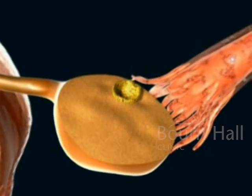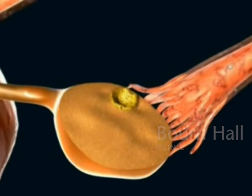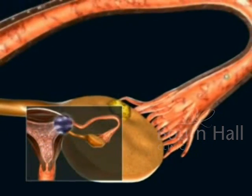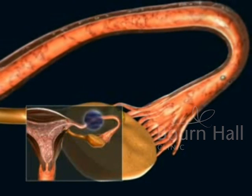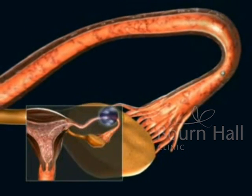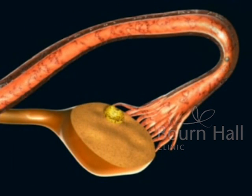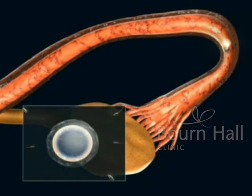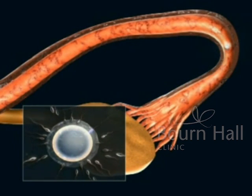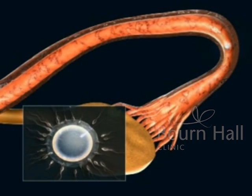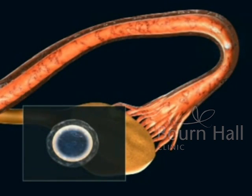The fallopian tube's fimbriae move towards the ovary and catch the oocyte, which stays near the ampullary zone of the tube waiting to be fertilized. If sexual intercourse occurs, the semen deposited in the vagina starts its ascension into the tube, and the sperm eventually arrive at the oocyte. One of these will succeed in penetrating into the interior of the oocyte.